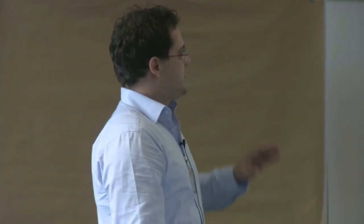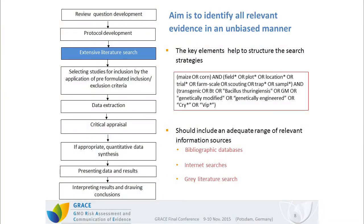Based on the protocol, the next step is to identify all relevant evidence in an unbiased manner. The key elements of the question help inform the development of an adequate search strategy. A single search string — an example of which was taken from the protocol — is applied to an adequate range of relevant information sources. This includes bibliographic databases as well as internet searches such as Google Scholar, but also very importantly, gray literature that is not published via the major databases.